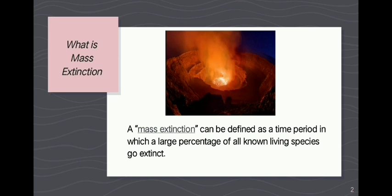What is a mass extinction? A mass extinction can be defined as a time period in which a large percentage of all living species go extinct.